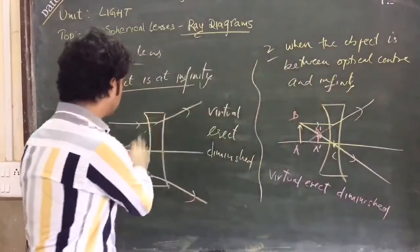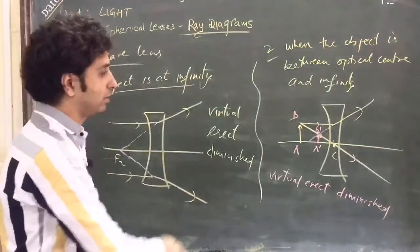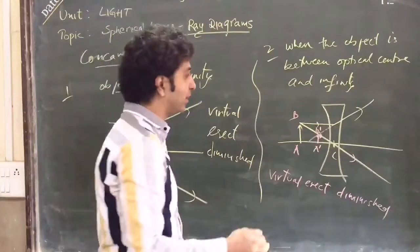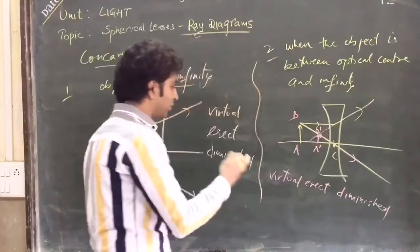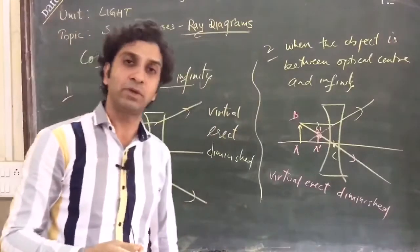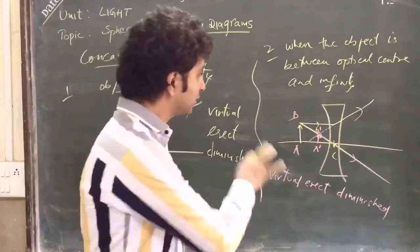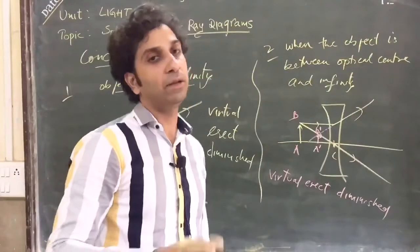In the first case, the image is very, very small. In this case, some finite image size will be formed but again quite smaller. So virtual, erect, and diminished images will be formed. In concave lens, wherever you place the object, you will get such type of ray diagrams. No real image will be formed.